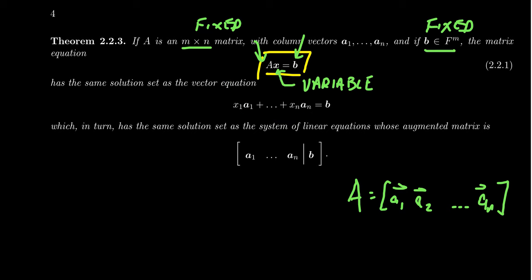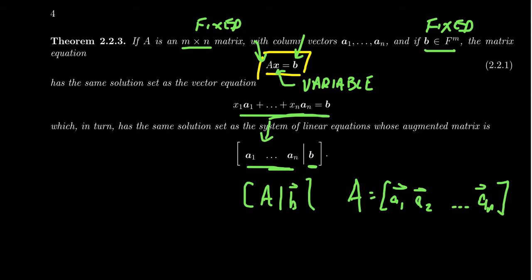So this matrix equation 2.2.1 is just equivalent to the vector equation we saw in the previous section. And as we've learned, this vector equation is equivalent to a system of linear equations, which is then represented by this augmented matrix, where the coefficient matrix is just the matrix A itself, and the augmented column is the vector b. So the matrix equation Ax equals b is equivalent to the linear system represented by the augmented matrix [A | b].